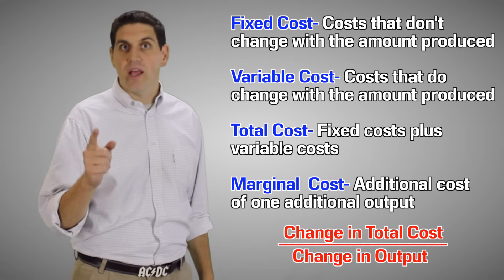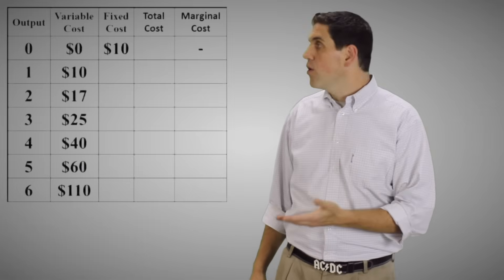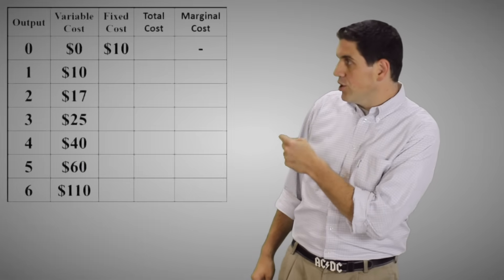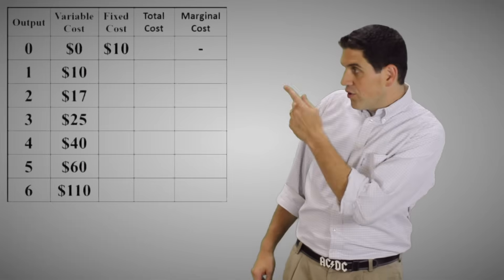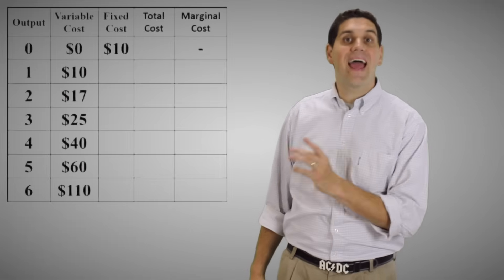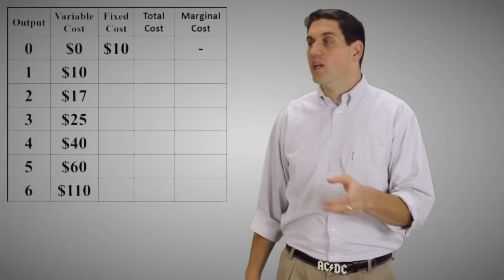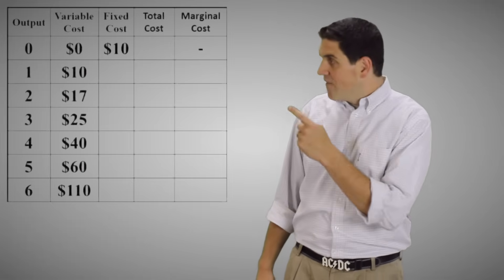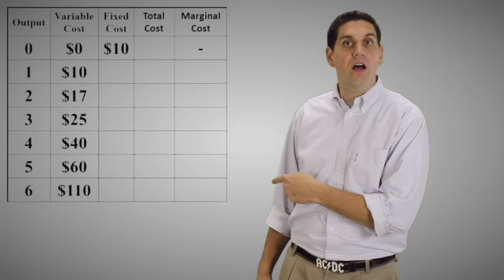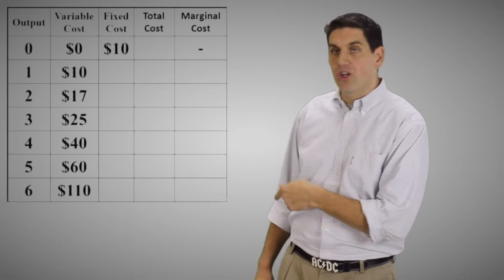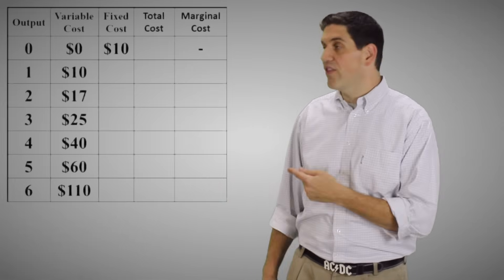Now let's see if you can calculate them on your own. Right here I have the cost for a given firm. We have zero output, and then one through six units that they can produce. I've also given you the variable cost and the fixed cost for producing no output. I want you to copy this chart on your piece of paper and finish off these columns — calculate the fixed cost, the total cost, and the marginal cost. Pause the video and do those calculations and I'll go over the answers.